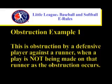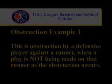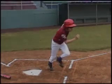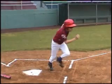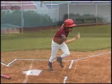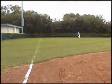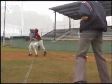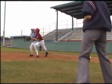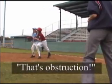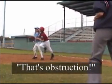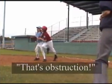This is an example of obstruction when a play is not being made on the runner. In this scenario, the batter hits a ball into left field. After rounding first base, the batter-runner collides with the first baseman and the umpire signals obstruction.